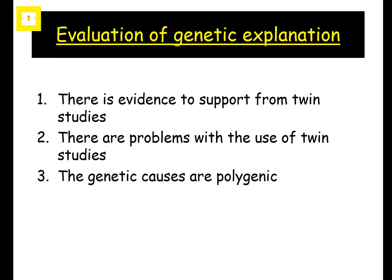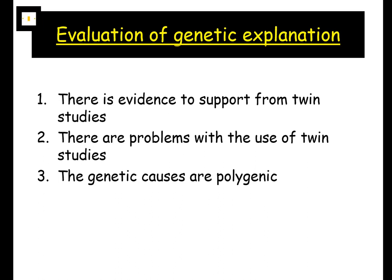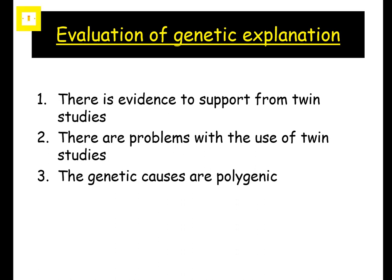Another problem: the genetic explanations aren't completely clear. They don't identify one gene — they're polygenic. That's obviously a problem because it means we can't identify a particular gene, making it difficult to draw clear scientific conclusions.